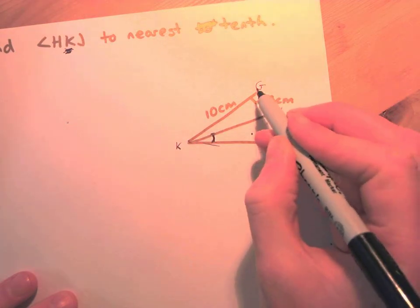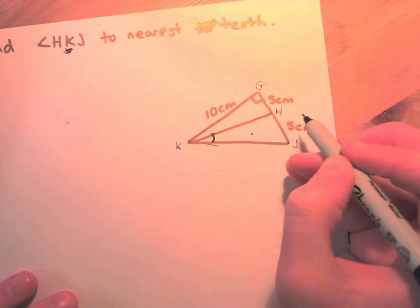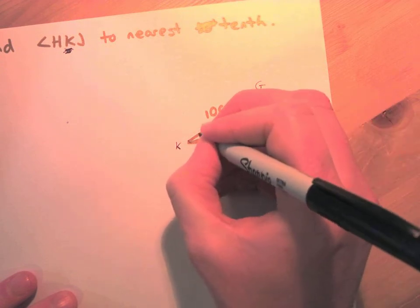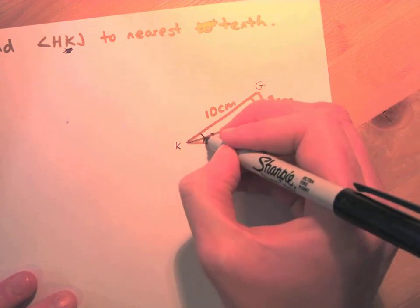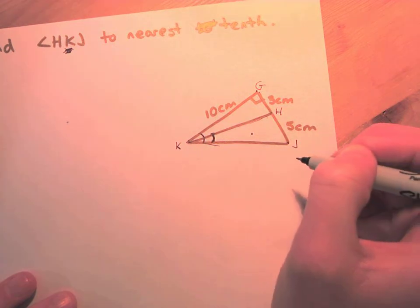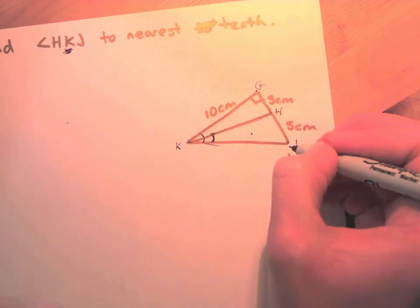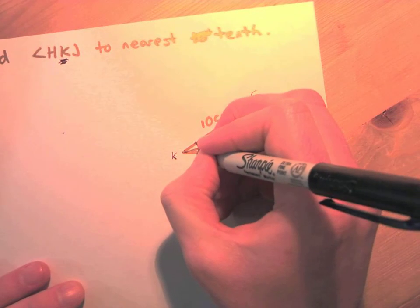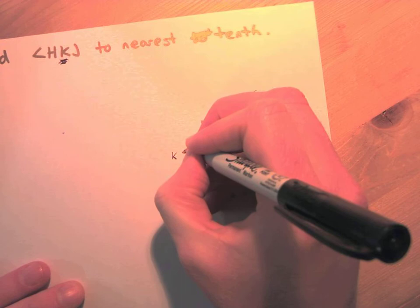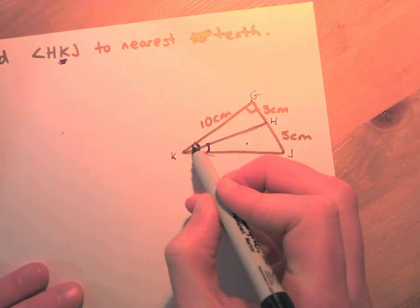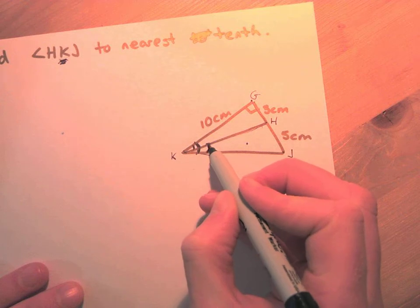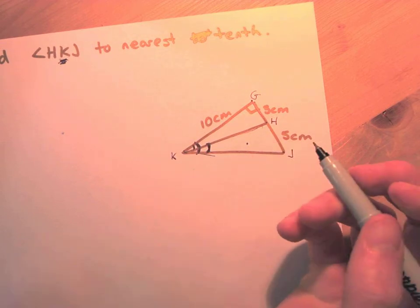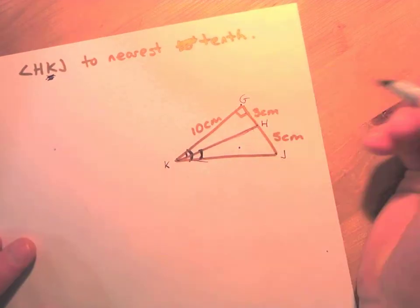We don't know if there's a right angle at K, so we can't assume that. The smaller triangle inside is not a right triangle, so we can't use trig on it directly. However, the big outer triangle is a right triangle, and there's also a small right triangle on the side. The technique: find the full angle using the big triangle, find the small inner angle using the small right triangle, then subtract.